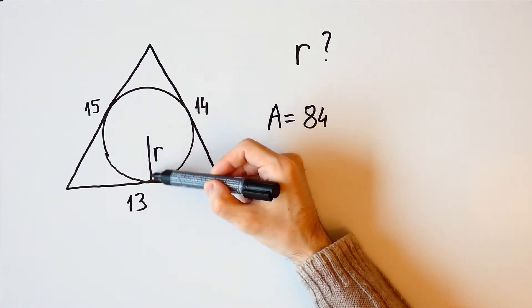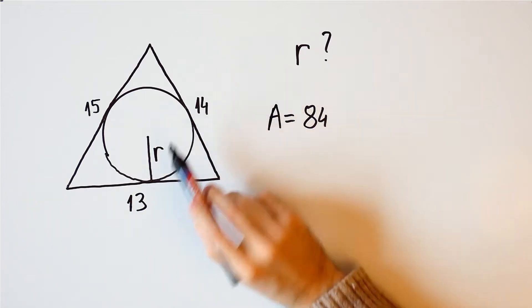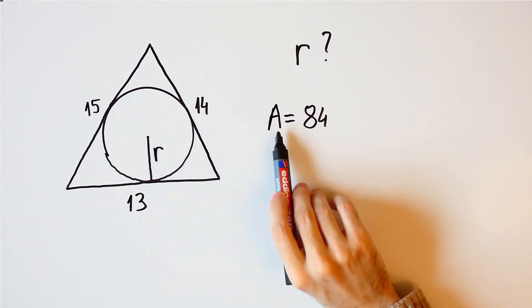Now we'll show how the radius of the inscribed circle, also known as the inradius, relates to area.